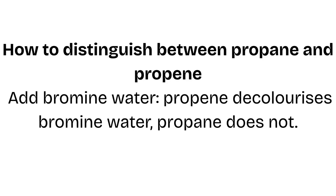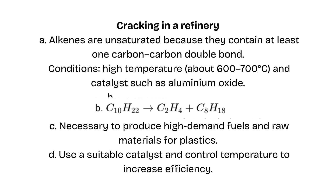Cracking in a refinery. A: Alkenes are unsaturated because they contain at least one carbon-carbon double bond. Conditions: high temperature, about 600 to 700 degrees Celsius, and catalysts such as aluminum oxide. Necessary to produce high-demand fuels and raw materials for plastics.